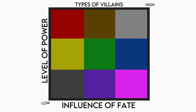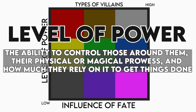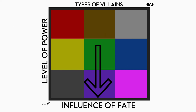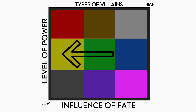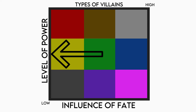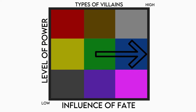The axes I use this time are based on level of power versus influence of fate. Starting with the vertical axis, power is a villain's ability to control those around them, their physical or magical prowess, and how much they rely on it to get things done. To the bottom are characters that don't use their power or don't need it in the same way higher villains do. Moving to the horizontal axis, influence of fate is how much will they exert over the things that happened to them. Villains to the left don't have to deal with destiny or fate telling them how their demise will play out, so their stories tend to be more varied. And to the right are those who have an inescapable defeat waiting at the hands of their hero.